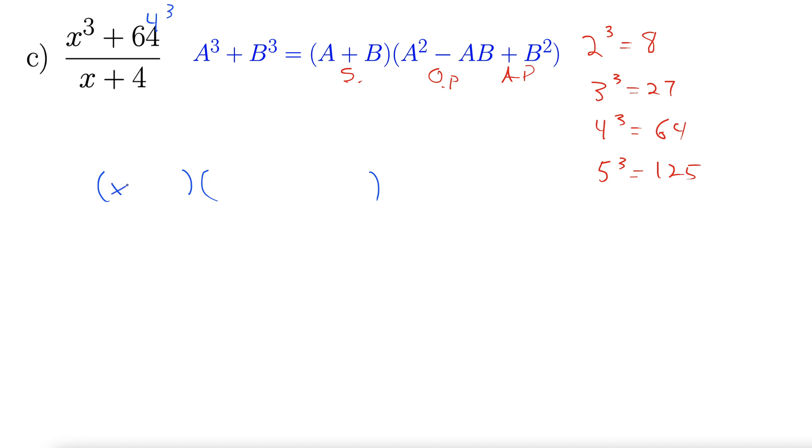So we'll do x plus 4. And then we have x squared minus, multiply them together, 4x plus, and then just square the 4, 16. All over the denominator, which is x plus 4.